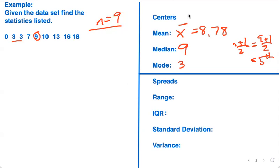Range is going to be max minus min. The largest value is 18, the smallest value is zero, so the range of values here is 18.